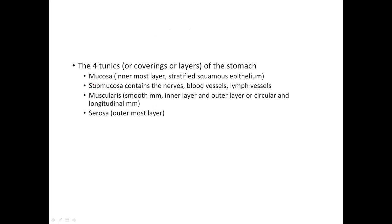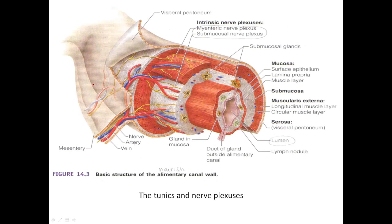You have four layers to the stomach, working from the inside out. First is the mucosal layer, where the food is — inside the lumen, which is basically like a tunnel. The next layer out is the submucosal layer, which contains submucosal glands that release digestive juices and other substances to aid in the continual breakdown of food.